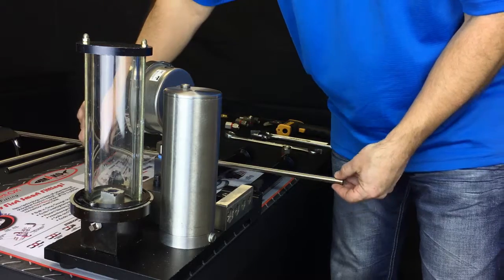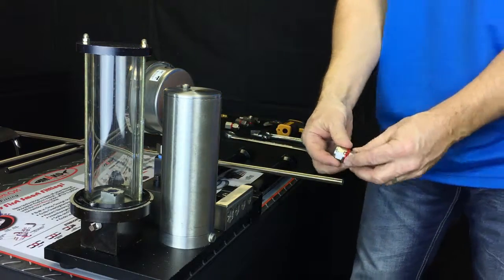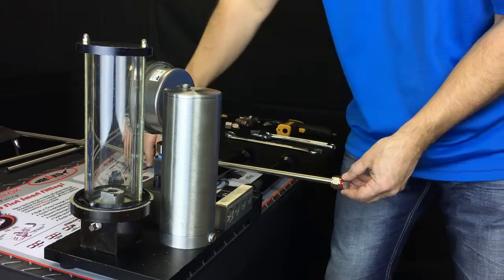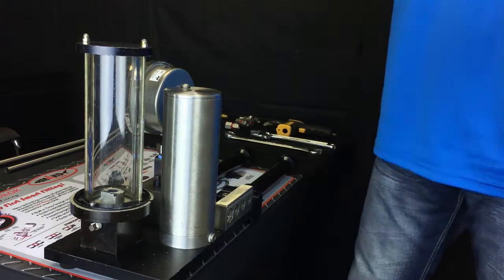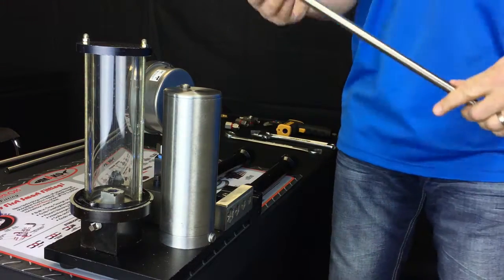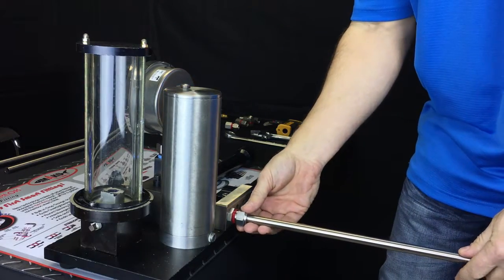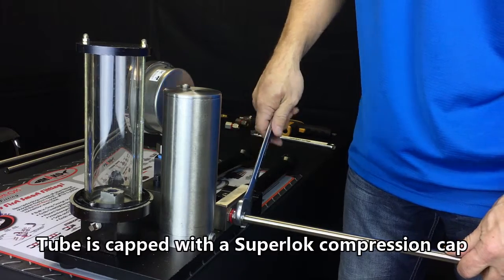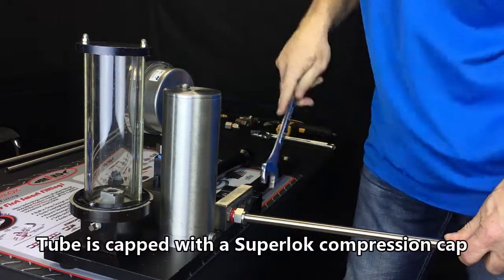To construct our first test sample, we will use this prepared three-foot section of tubing and connect a tube compression cap to one end. Note the SuperLock patented red gap gauge rings on the fitting. They will break away as the fitting is tightened to the precise point of correct compression, guaranteeing an accurate connection.